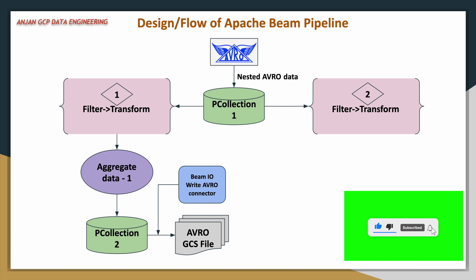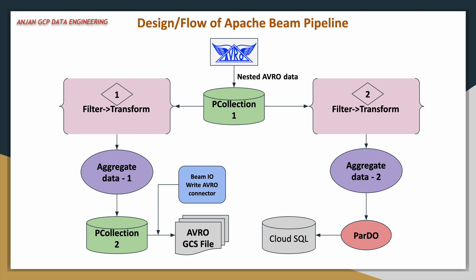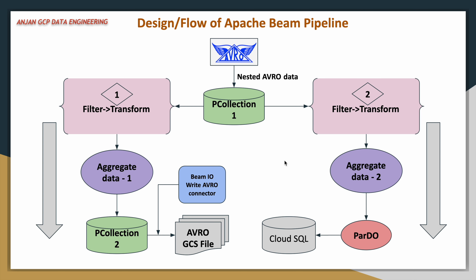In the second branch, a similar approach — we again filter the data for a different criteria, aggregate the data, and then use a ParDo functionality. ParDo is used to define user-defined logic which can be executed in a parallel distributed environment like Dataflow. Within that ParDo we define the database connection, prepare insert statements, format the data for insertion into a Cloud SQL table, and insert the data. These two branches will be executed in parallel, as you will see when you run this pipeline in the Dataflow environment.